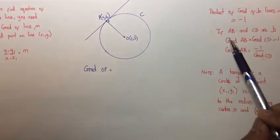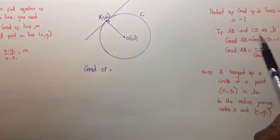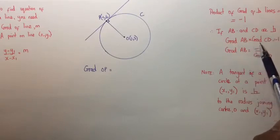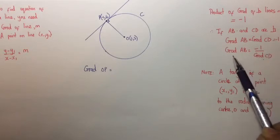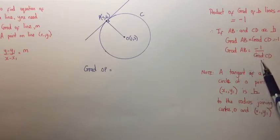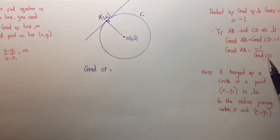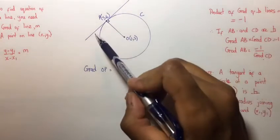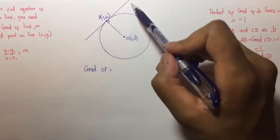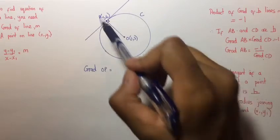Remember that the product of the gradients of perpendicular lines equals minus 1. This means that if AB and CD are perpendicular lines, then the gradient of AB times the gradient of CD equals minus 1, and the gradient of AB is equal to minus 1 divided by the gradient of CD. So, in order to find the gradient of the tangent, we must first find the gradient of OP.